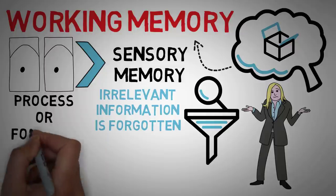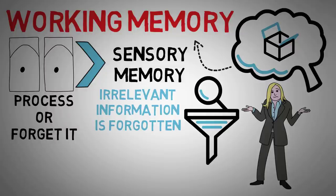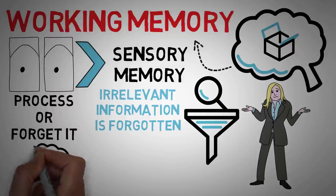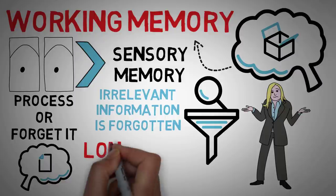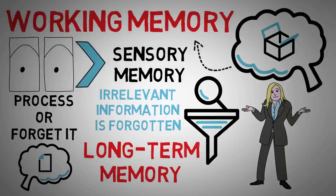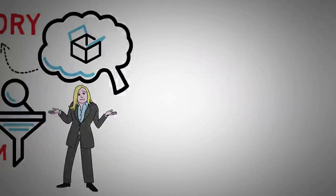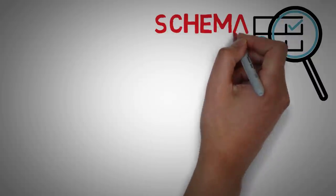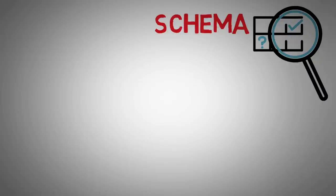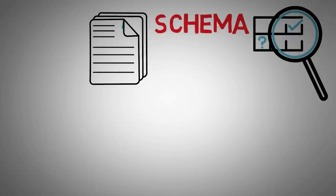Once information is moved to your working memory, your brain begins to process it, or decides to forget it. The ultimate goal is to store the important information into your long-term memory. Psychologists believe that within long-term memory are structures of information called hierarchies. These structures are called schema, and they help you relate individual pieces of information to other pieces of information.